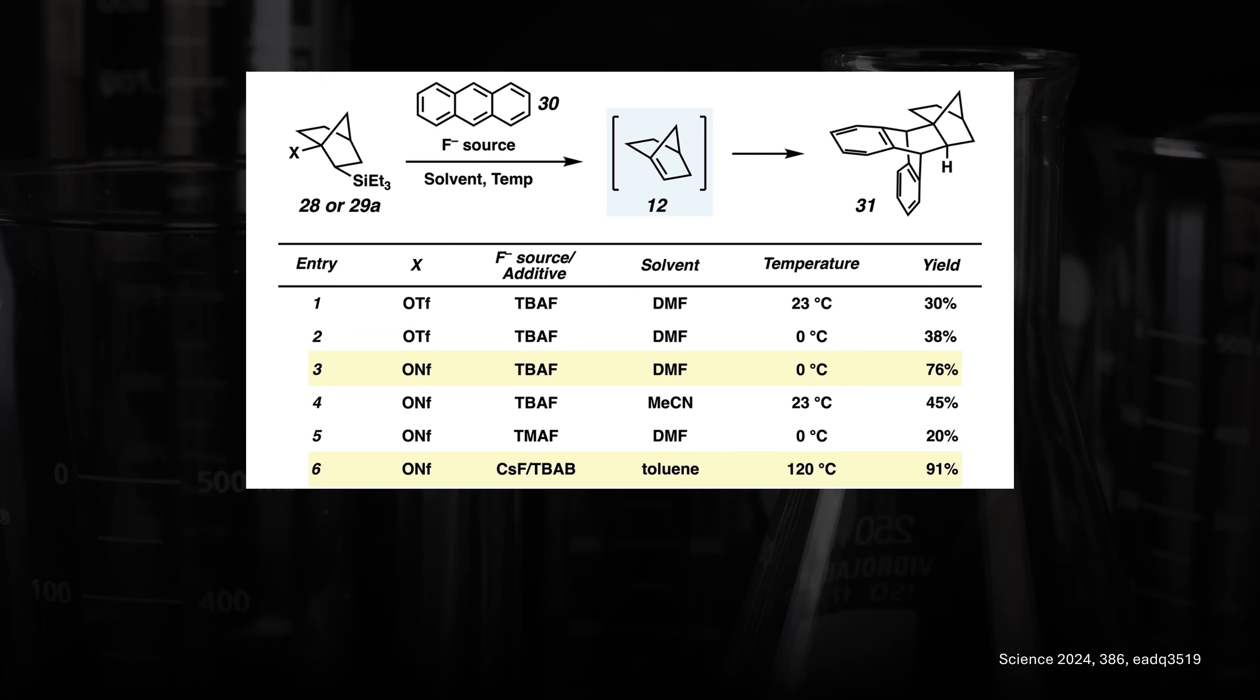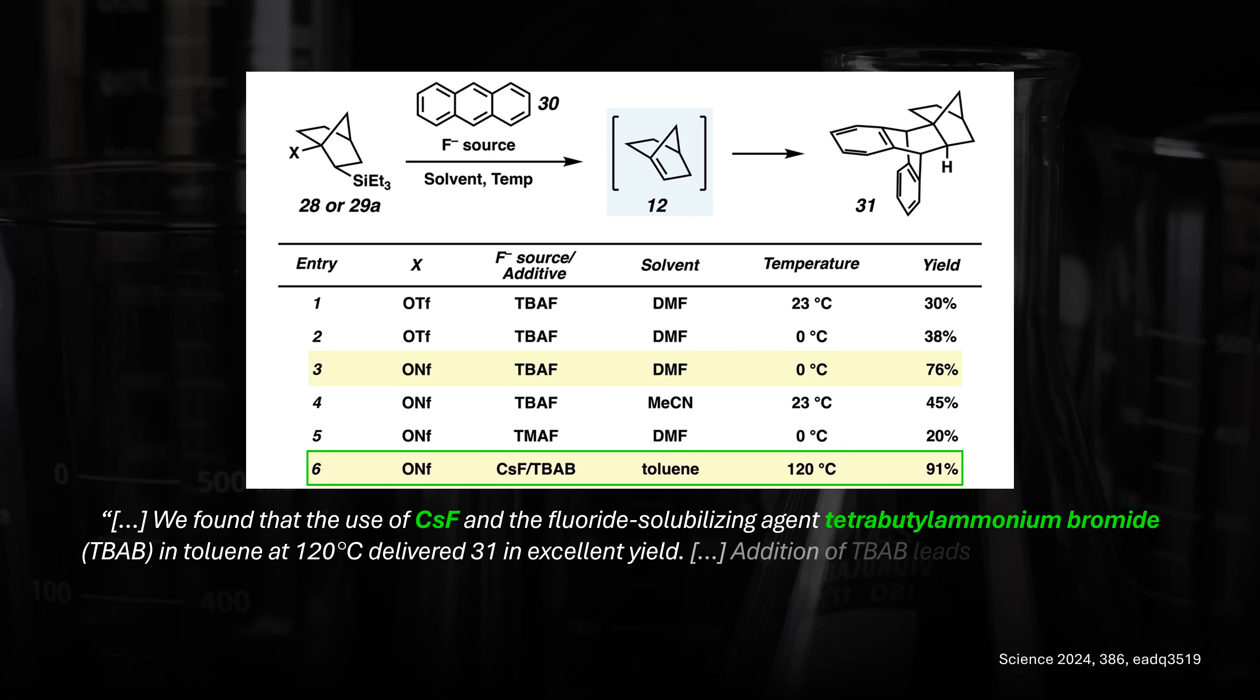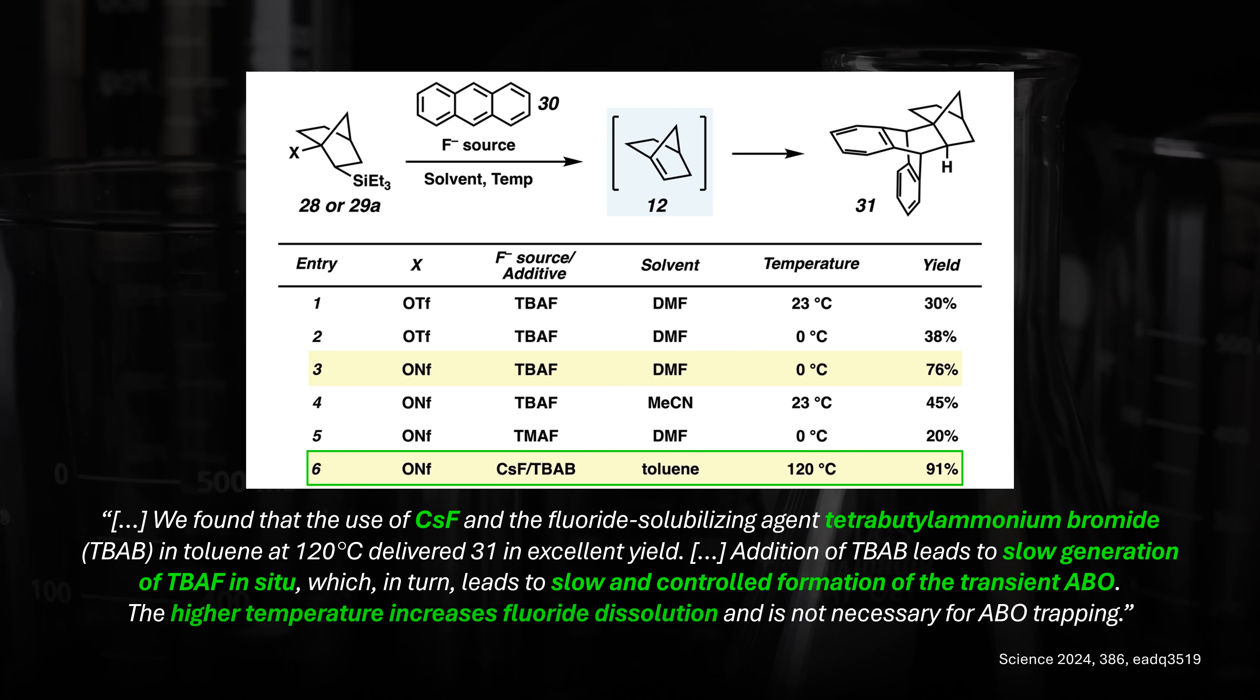The chemists optimized the conditions by using anthracene as a trapping agent. They found success with a low temperature option using the classic fluoride source TBAF or alternatively a high temperature option using cesium fluoride and tetrabutyl bromide. This is essentially a slow release source of TBAF which helps to control the reaction. The high yield is remarkable as you would expect 16 hours at 120 degrees to cause quite some damage. Well, it doesn't and the experimental procedure is pretty simple.